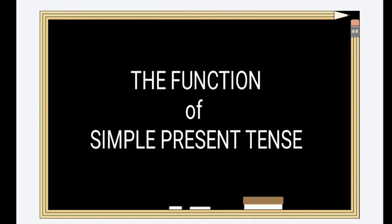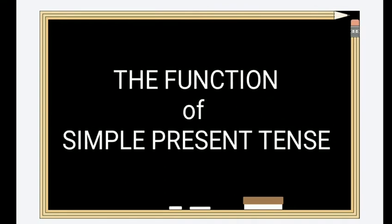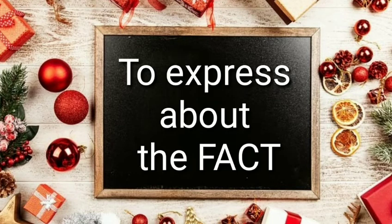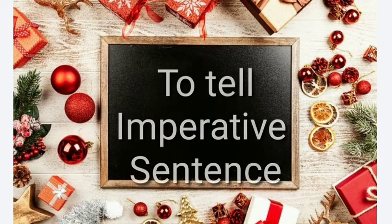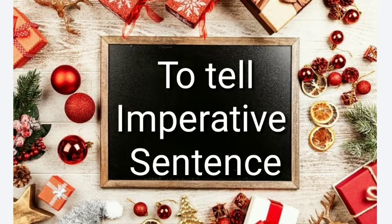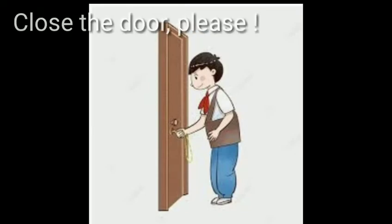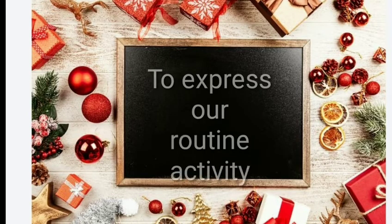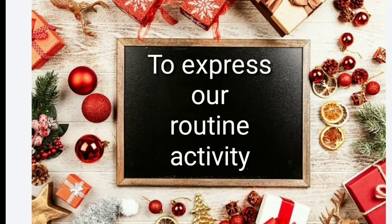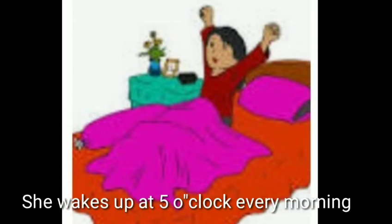The function of simple present tense: number one is to express a fact — for example, 'The sun rises from the east.' Number two is to tell an imperative sentence — for example, 'Close the door, please.' Number three is to express our routine activity — for example, 'She wakes up at five o'clock every morning.'